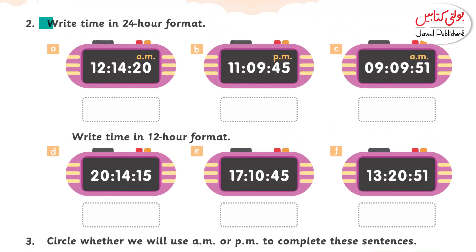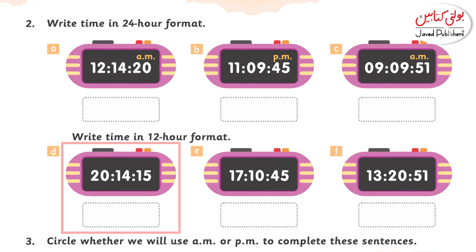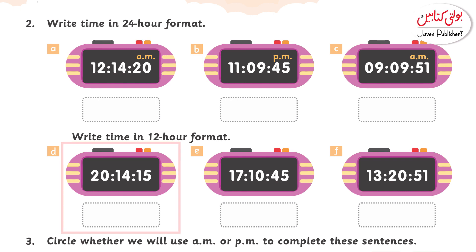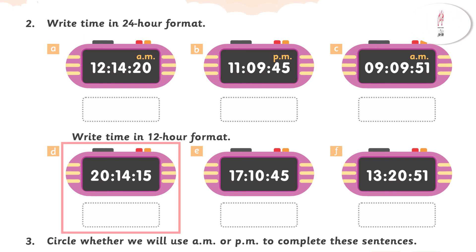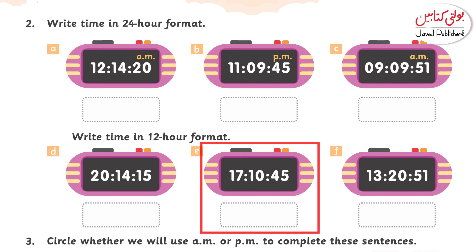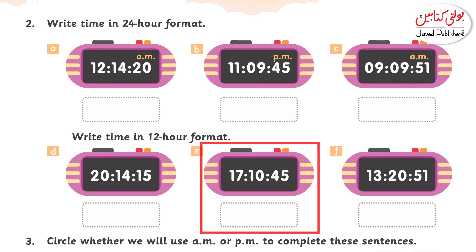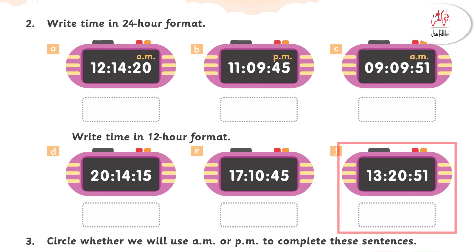Question number 2: Write down in 24-hour format. For part D, the time given is 20:14:15. When converting to 12-hour format, if the hour value is more than 12, subtract 12. Here, 20 minus 12 is 8, so the time becomes 8 hours, 14 minutes, 15 seconds. For another example, 17 minus 12 is 5, so we write 5 hours, 10 minutes, 45 seconds. For 13, 13 minus 12 is 1, so the time is 1 hour, 20 minutes, 51 seconds.